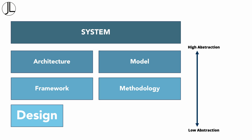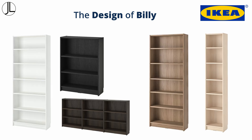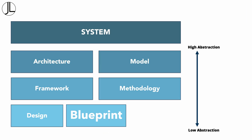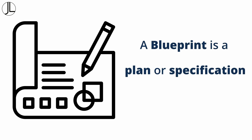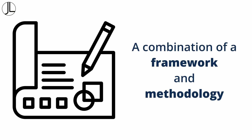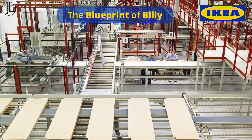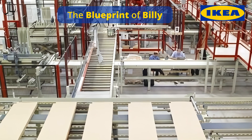A design is a process or outcome of configuring a system. In our IKEA example, the design of Billy would be the different styles and colors. Blueprint is another term that causes confusion. A blueprint is a plan or specification for building a system and can be thought of as a combination of a framework and methodology. The blueprint of Billy is a specification for manufacturing it — for example, what kind of wood to use.